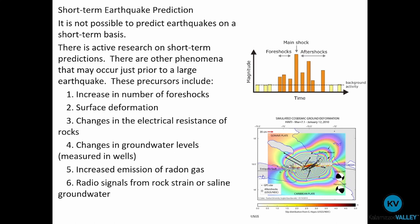Also relatively new in the world of earthquake monitoring is looking at radio signals from both rock strain and saline groundwater. This is still being debated in terms of how effective and how strong a predictor this can be. The idea is we're looking at the level of interference — radio waves are just low-level frequency waves — but many other things can produce that kind of signal, making it hard to determine whether it's coming from foreshocks or other sources. This last method is still very much in its development stage.